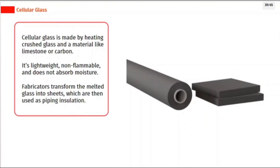Cellular glass is made by heating crushed glass and a material like limestone or carbon. It's lightweight, non-flammable, and does not absorb moisture. Fabricators transform the melted glass into sheets, which are then used as piping insulation.